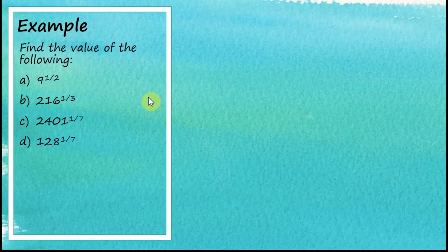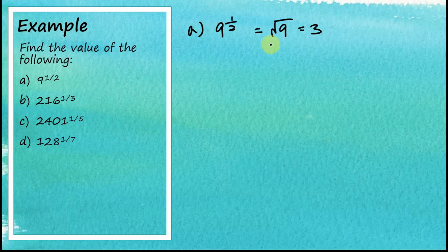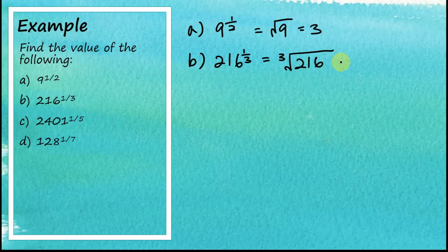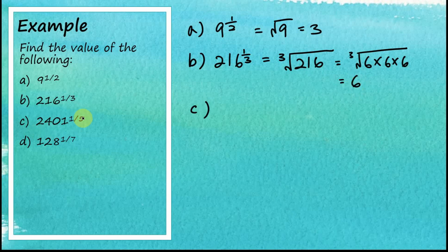Let's see some examples — find the values of the following. For question a: 9 to the power of 1 over 2 equals the square root of 9, which equals 3. For question b: 216 to the power of 1 over 3 equals the cube root of 216. We find that 216 equals 6 times 6 times 6, and therefore this equals 6.